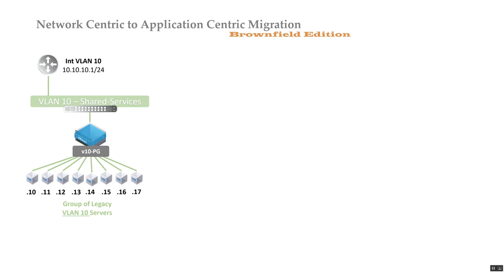A layer 2 top-of-rack switch connects into the compute layer. What we have is a typical trunk interface, which can connect down to Cisco UCS, HyperFlex, IBM, or similar — it doesn't matter. All we know is we have some type of network connectivity arriving at the network switch.